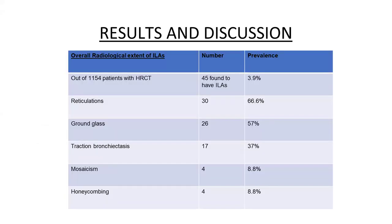What I found is that the overall incidence is 4%, which is quite high. We have to detect it early and recommend management according to the patient's situation and disease progression, so that progression from interstitial lung abnormality to fibrosis can be stopped. I found reticulation in 66% of patients with interstitial lung abnormality. Out of 114 patients, 45 patients — 4% — had interstitial lung abnormalities. Of those 45 patients: reticulation was 66%, ground glassing 57%, traction bronchiectasis 37%, mosaicism 8.8%, and honeycombing 8.8%.